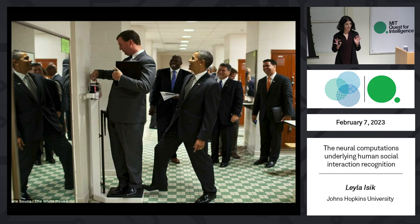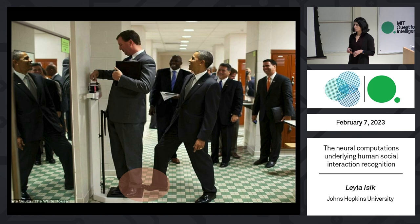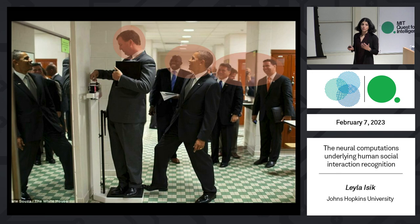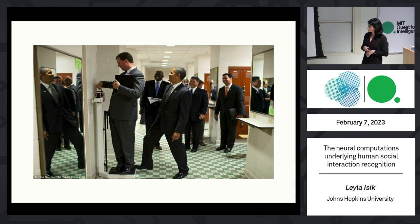Many of you have probably seen this image — I think I borrowed the example from Gabrielle. Even if you haven't, you can quickly understand what's happening and why it's funny. To do that, you need to not only recognize objects and people, but you need rich knowledge of the physical world — like the fact that when you step on a scale it reads heavier — and also the social world. You need to know that the guy on the scale doesn't know Obama's foot is on it, but everyone else does and they're all laughing about it. This motivates the main question in our lab: how do humans extract all of this rich social information from visual input?